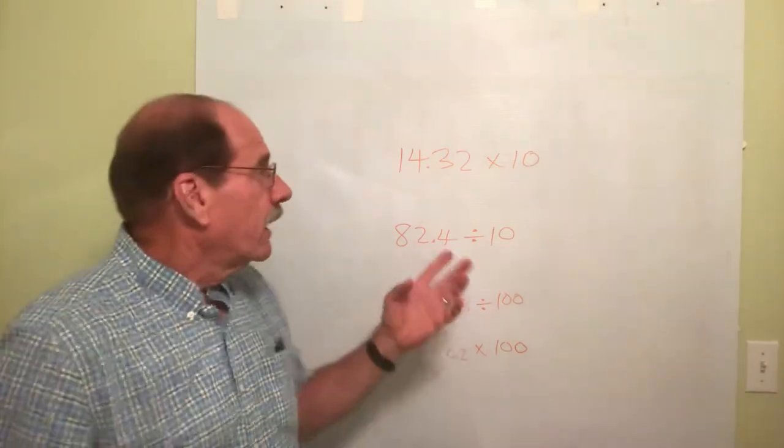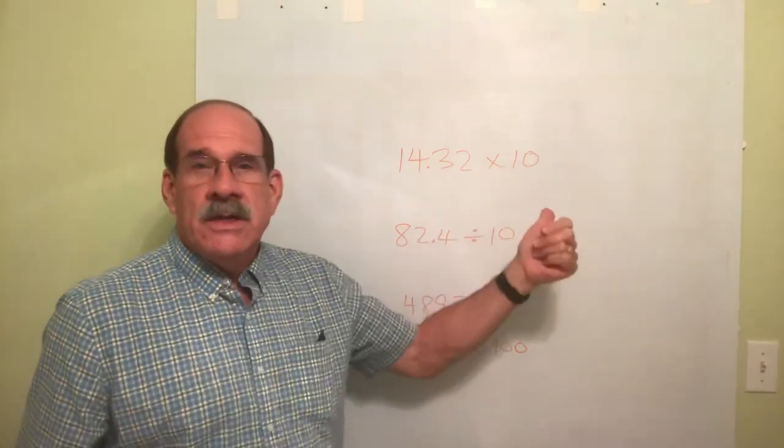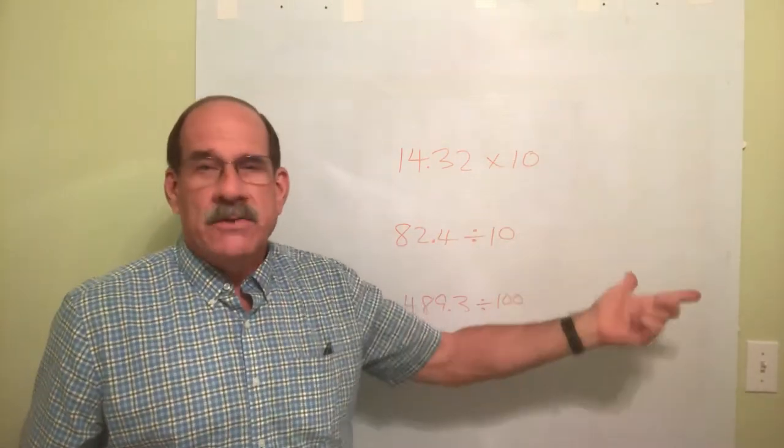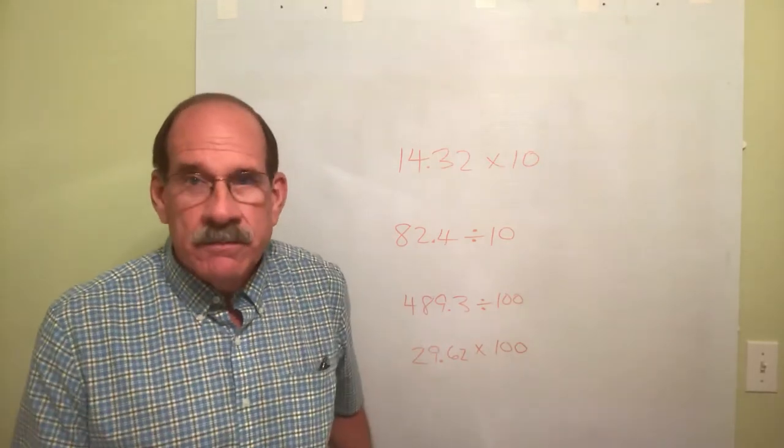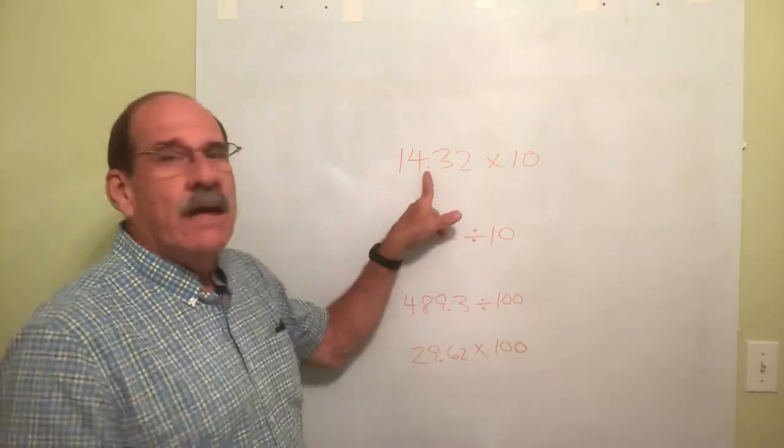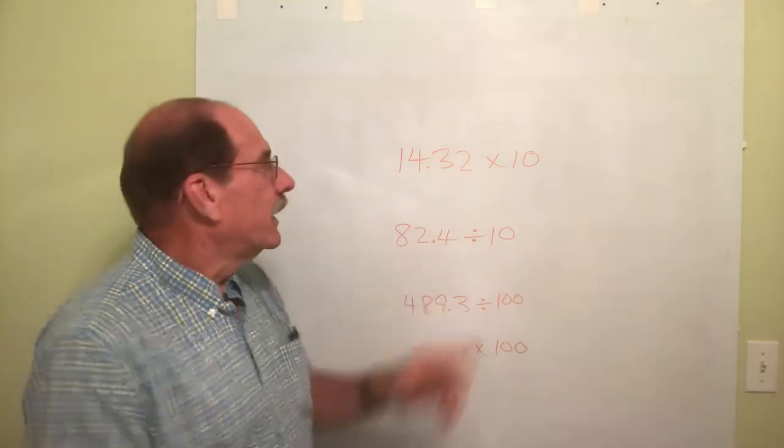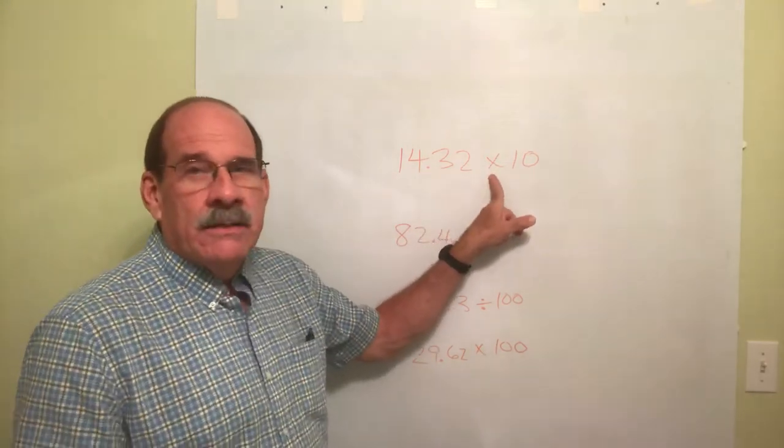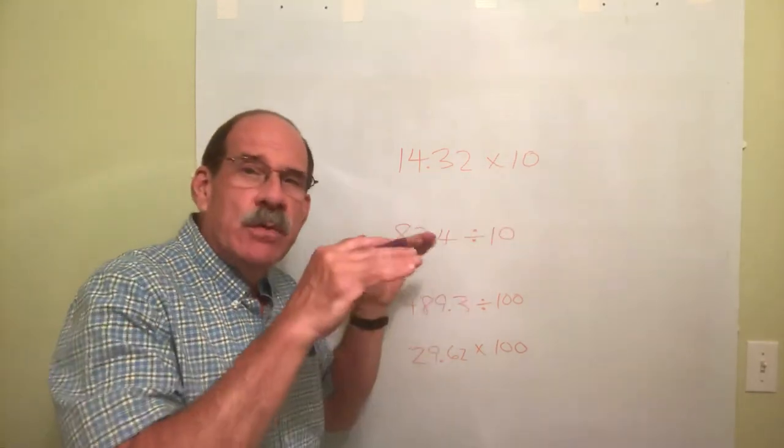Here's what to do. If you're multiplying by 10 or 100 or 1,000, all you have to do is move the little dot. Where? Well, since we're multiplying, that's becoming a bigger number. Move it to the right.